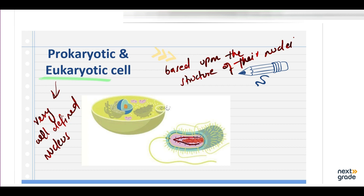But in prokaryotic cells, the genetic material is without any nuclear membrane covering and is directly submerged into the cytoplasm. Those organisms that have prokaryotic cells are called prokaryotes.